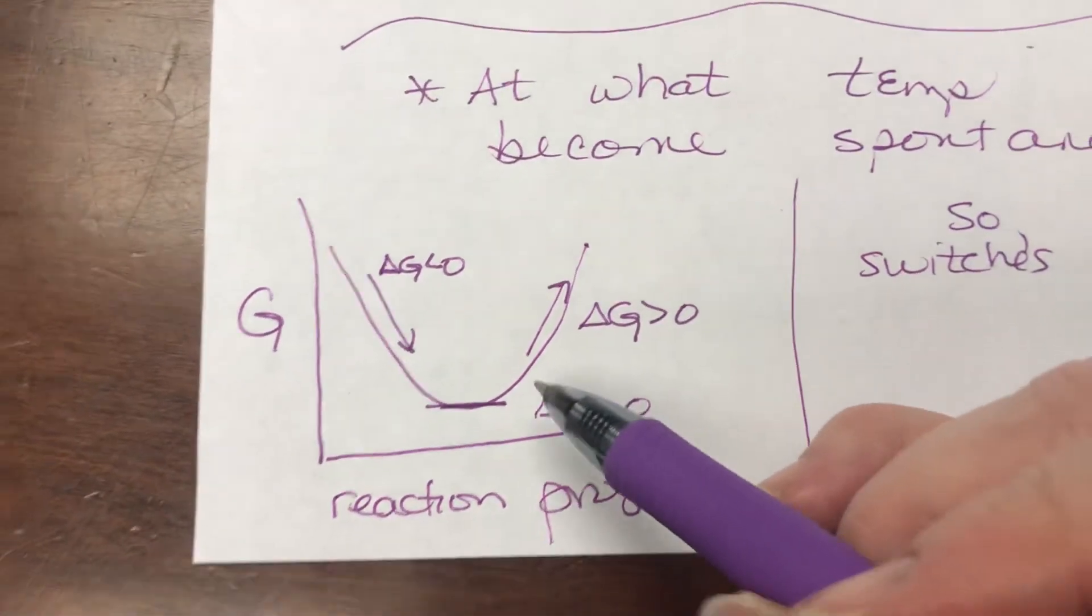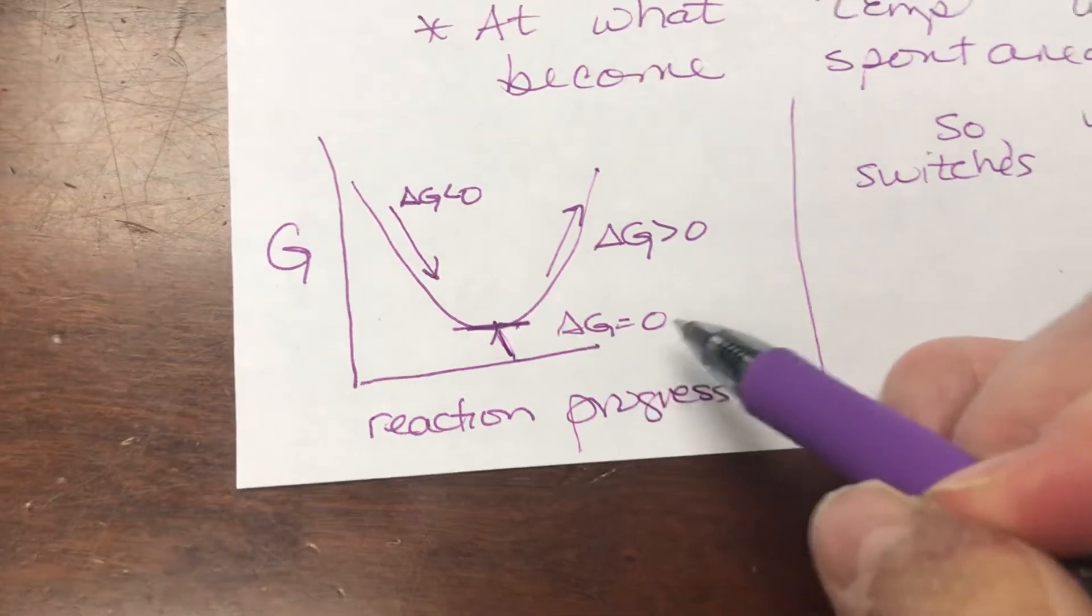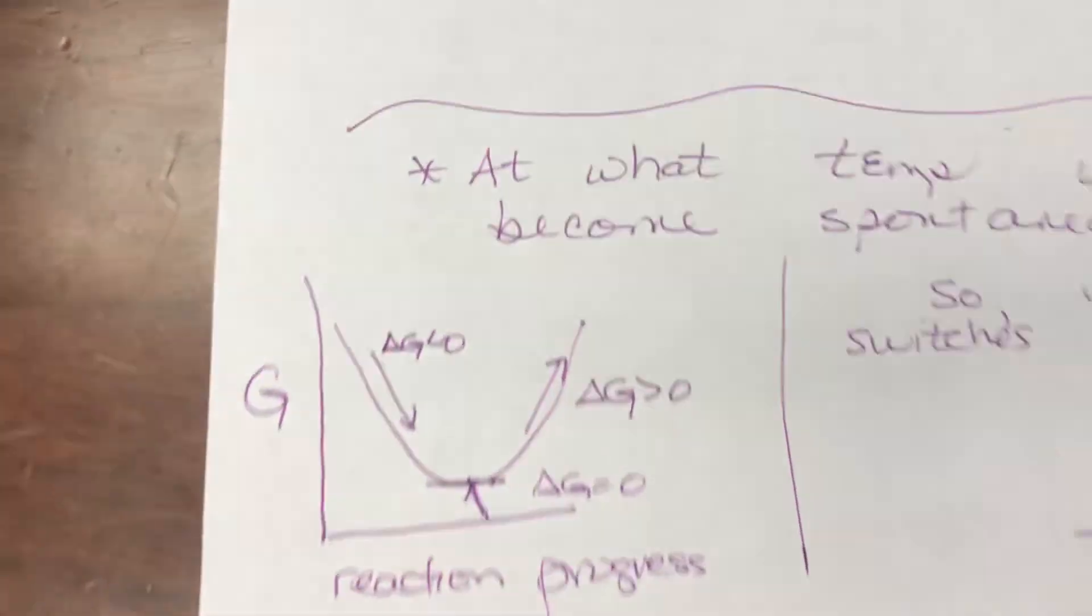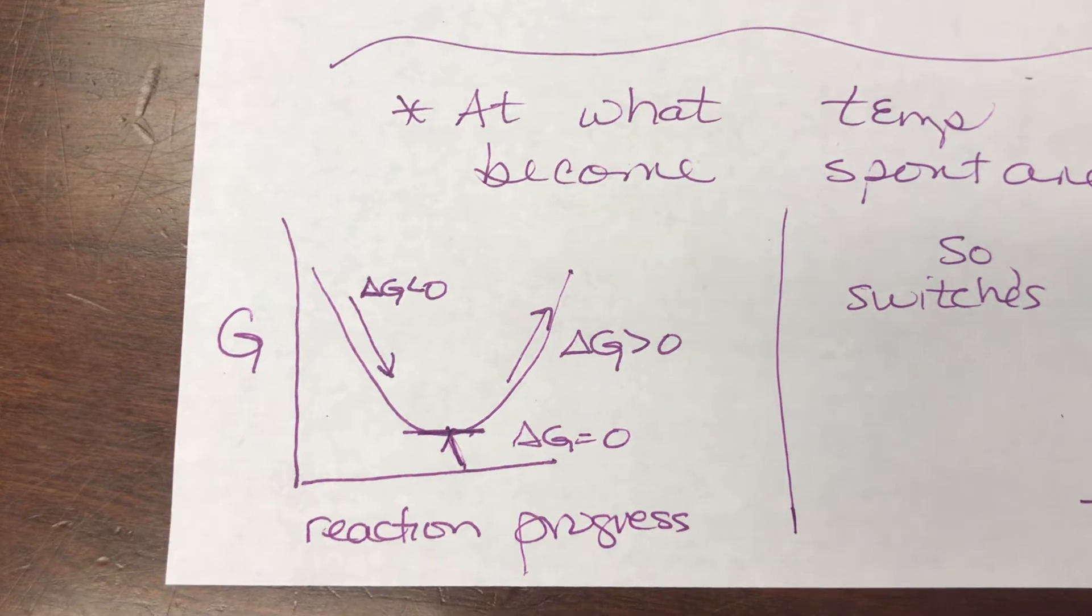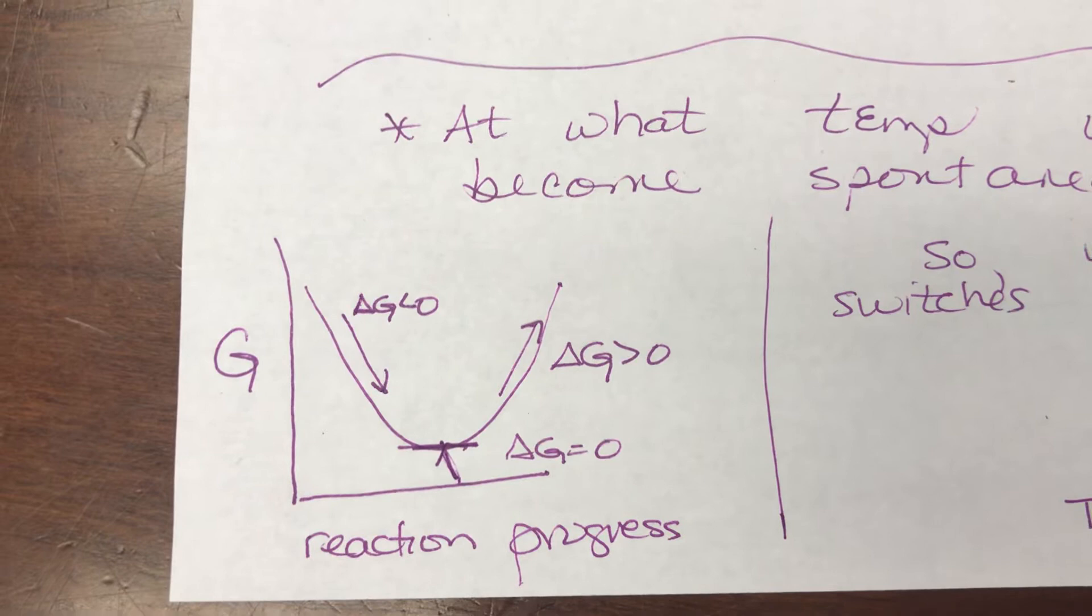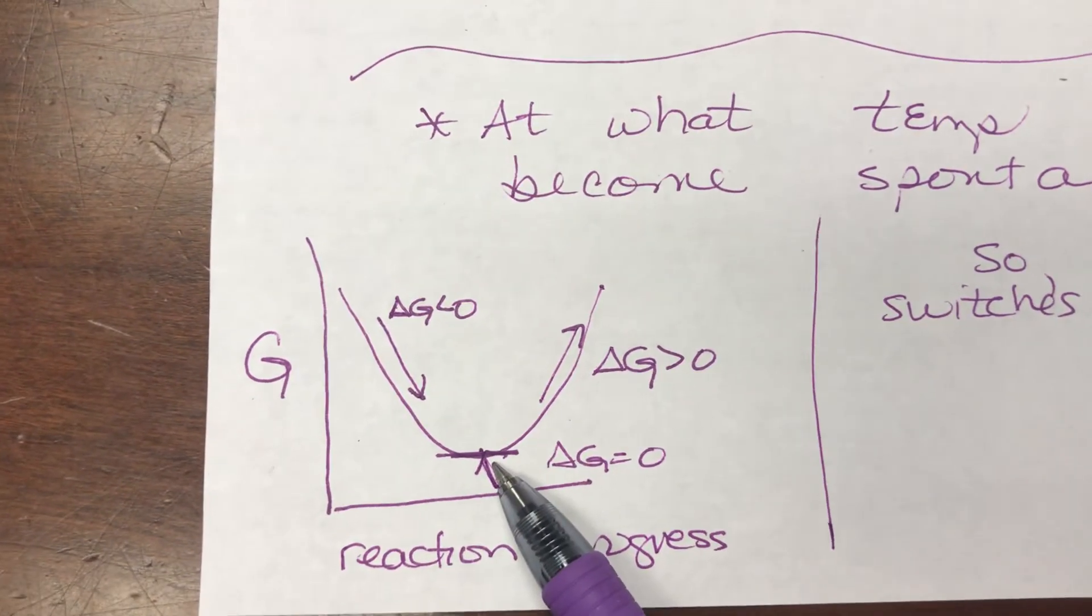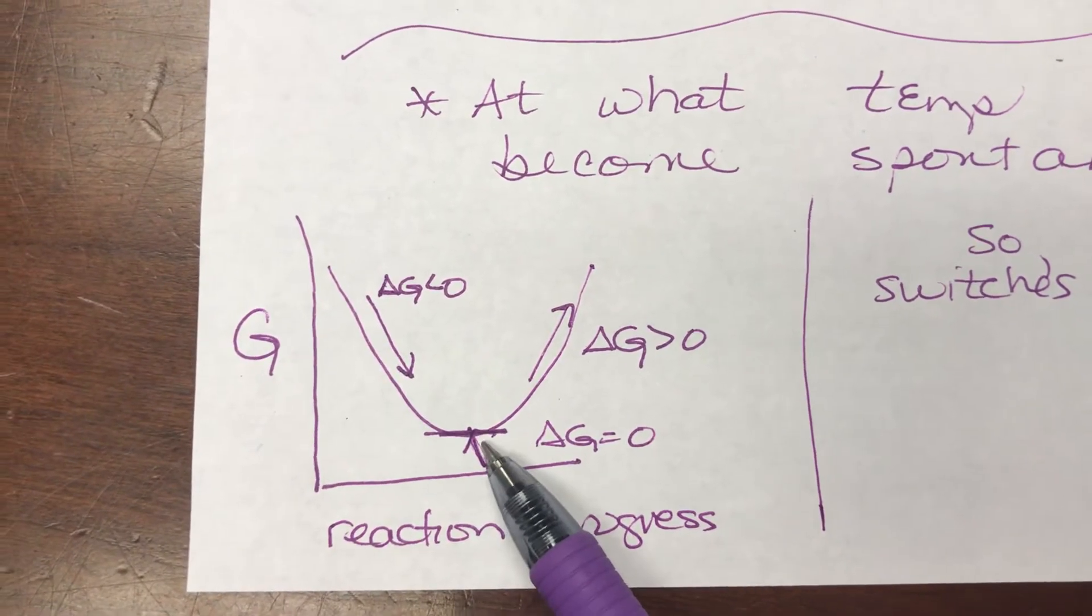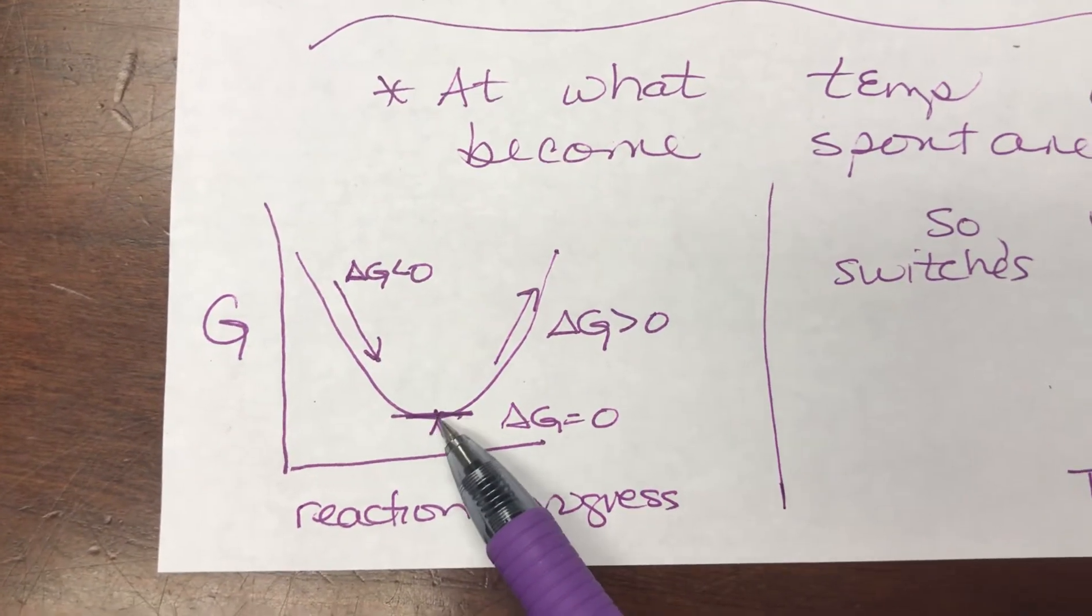Well what I really want to point out here is at the bottom of this curve, delta G equals zero, it's flat so there's no change, no slope, and what does it mean when delta G equals zero? Well it means the system is at equilibrium. Basically at equilibrium you're at the lowest possible energy point and so there's no driving force, there's no energy that can be used to do any work because you're already at the lowest most favorable point, so at equilibrium at this low point delta G equals zero.